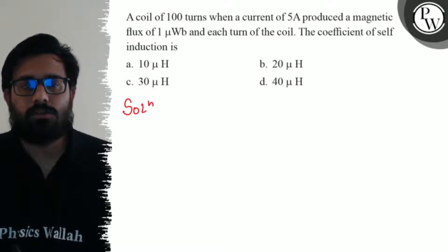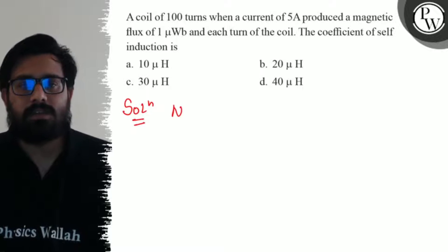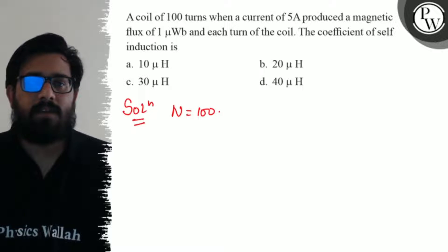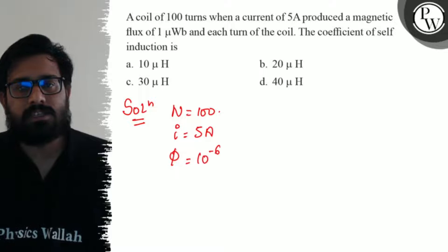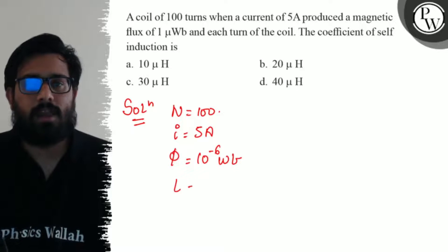So here in this problem we have the number of turns as 100, we have the value of current as 5 ampere, we have the value of flux as 10 raised to the minus 6 weber and we have to calculate the value of L.